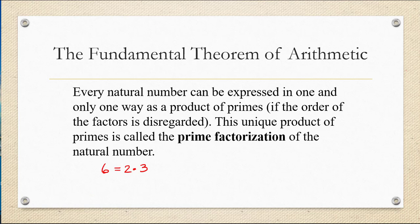For example, the number 6 can be written as the product 2 times 3, where 2 and 3 are prime numbers. Whereas the number 24 can be written as 2 times 2 times 2 times 3, or using exponential notation, 2 to the 3rd times 3.